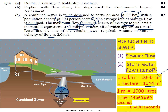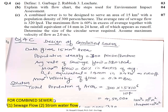For unit conversion: 1 m³ = 1000 liters, 1 day = 24 hours = 24 × 60 × 60 seconds. For the combined sewer, we consider sewage flow and stormwater flow. The given data: area = 15 km², population density = 300 persons per hectare, average sewage flow rate = 320 L/capita/day, maximum flow = 60% in excess of average, rainfall = 14 mm, maximum velocity = 0.2 m/s.